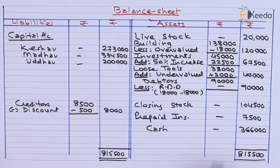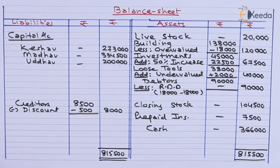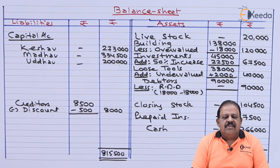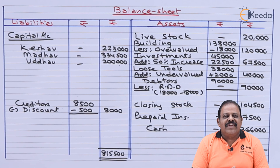The total of the balance sheet is 8,15,500 on both sides — assets and liabilities — confirming the balance sheet is tallied. In this question, we learned adjustments relating to goodwill and various other revaluation adjustments typical in the admission of a new partner. Thanks for watching this video — stay tuned with Ikida and subscribe to our channel.